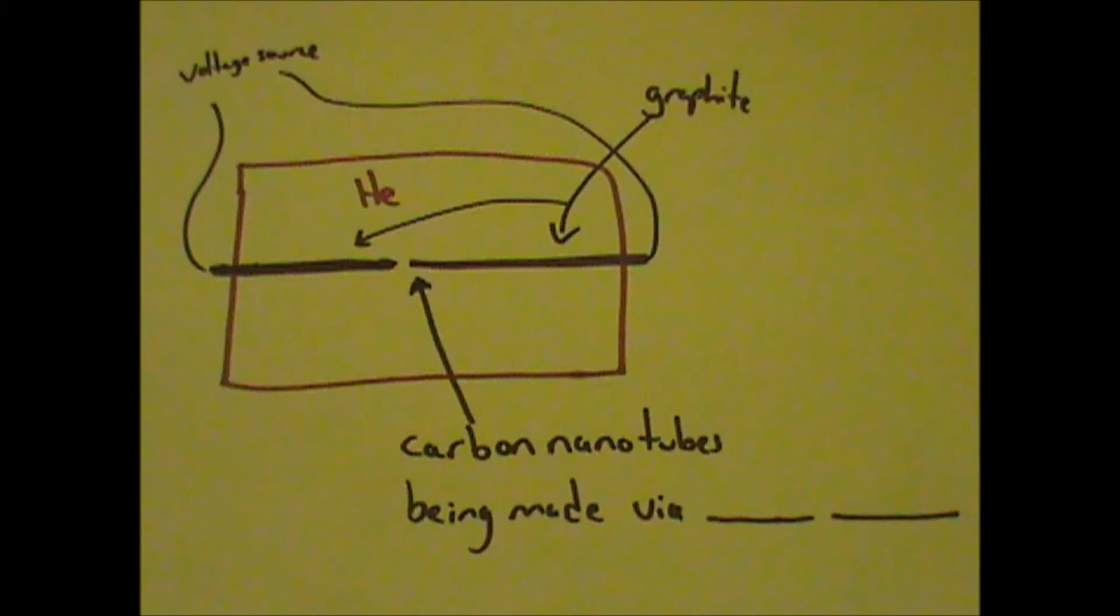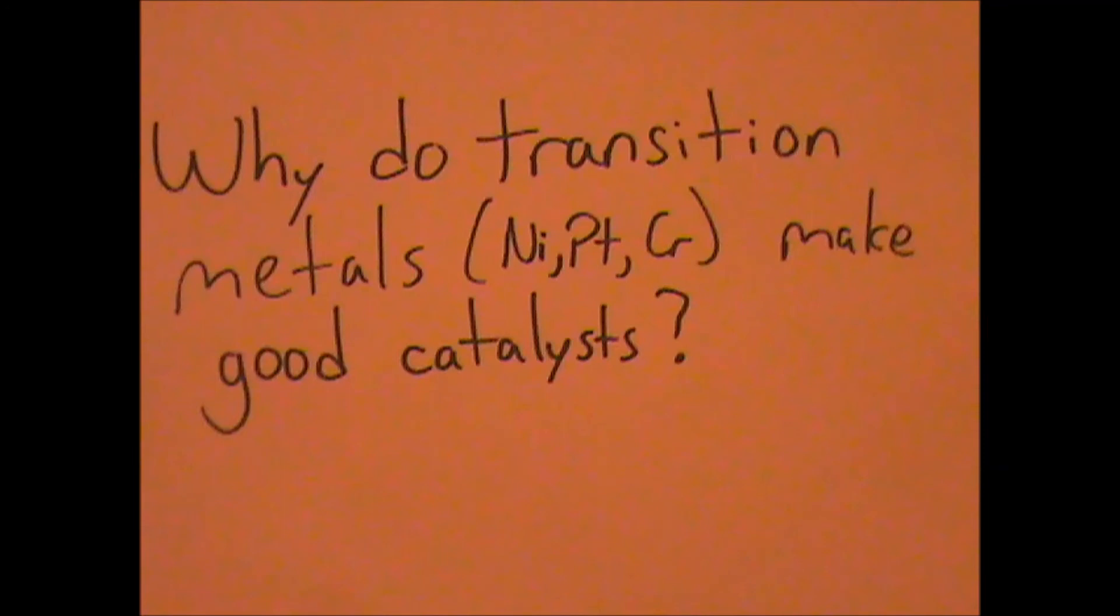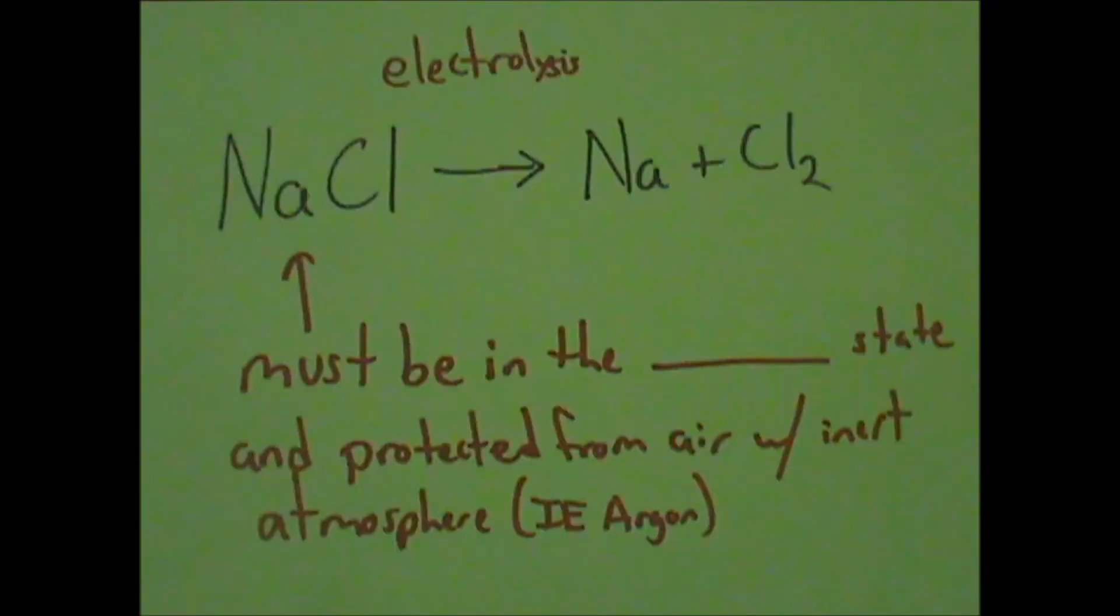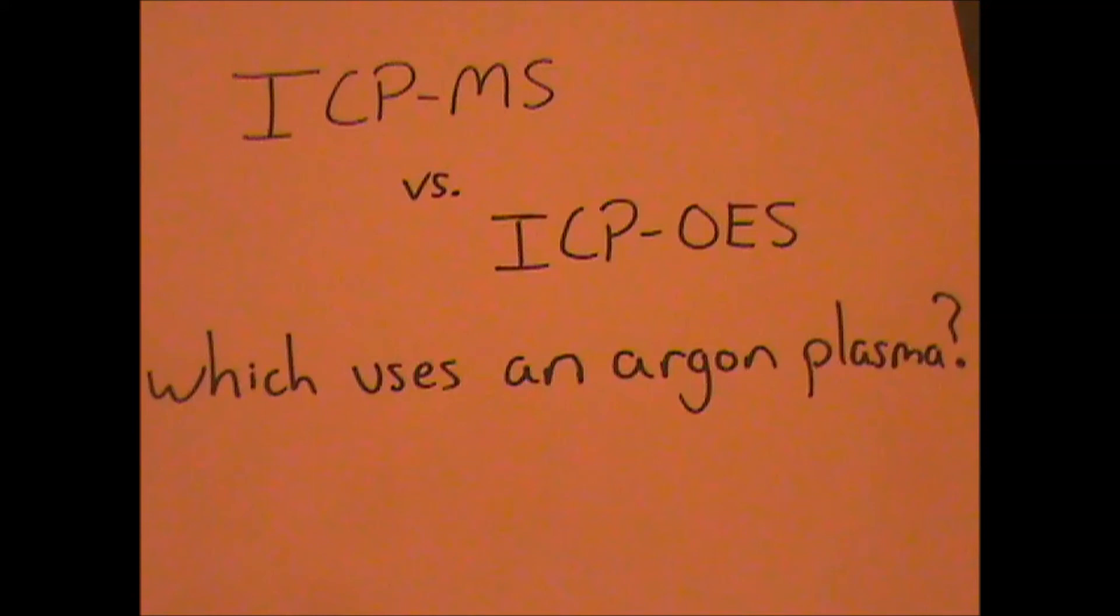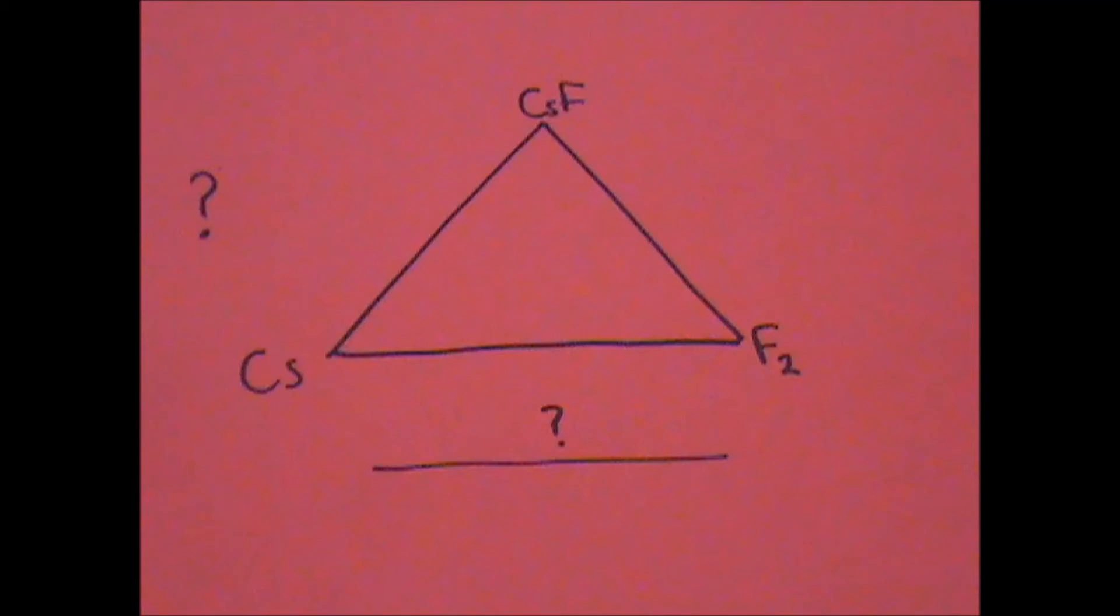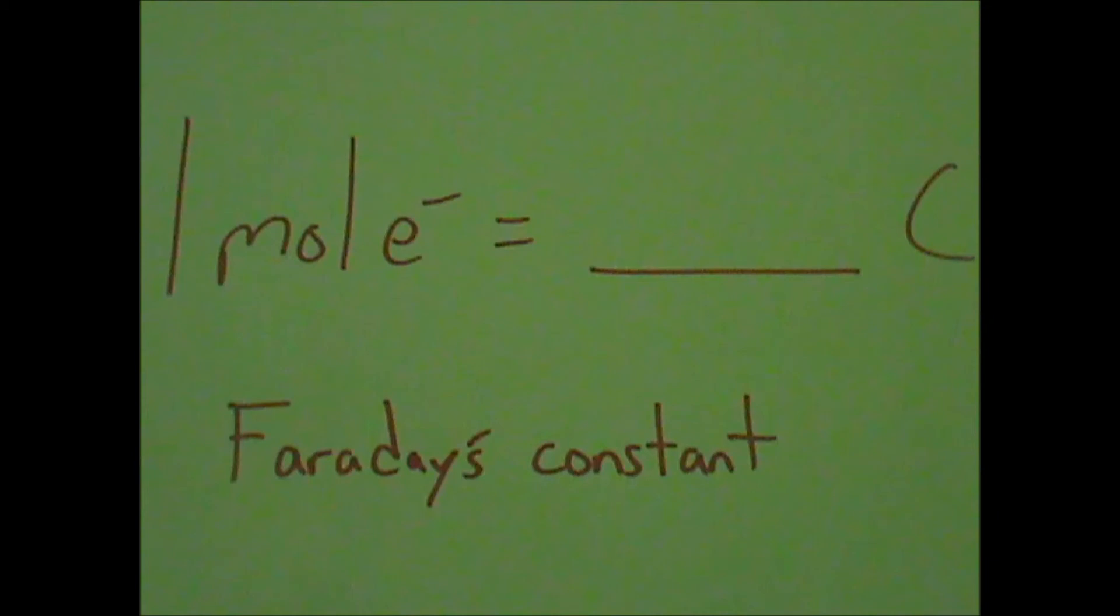Arc discharge. Source of electrons, and they have multiple oxidation states. Molten or liquid. 500 Coulombs.